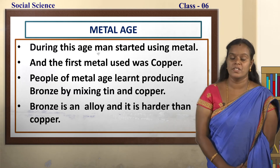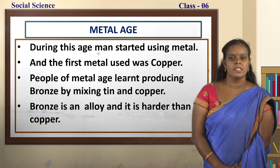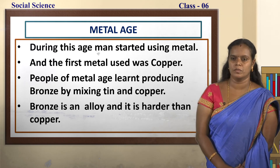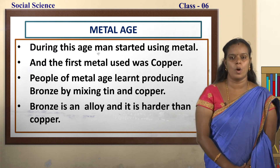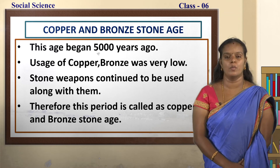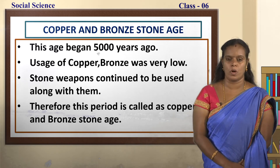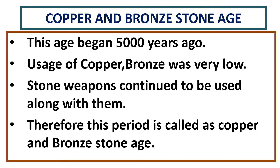Let us move on to Metal age. Metal age began at the end of the Neolithic age. During this age, man started using metal, and the first metal used was copper. People of Metal age learned producing bronze by mixing tin and copper. Bronze is an alloy — alloy is a mixture of two or more metals — and it is harder than copper. This age began 5,000 years ago. The usage of copper and bronze was very low initially, and stone weapons continued to be in use. Therefore this period is called the Copper and Bronze Stone Age.